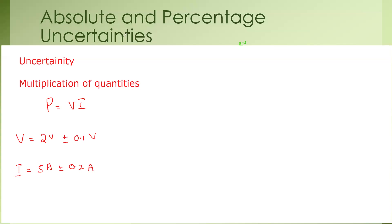Now how do we work out the uncertainty here? We will add, because whenever we want the total or compound uncertainty, we add. But the problem is that the two quantities do not have the same units — the unit of voltage is volts and the unit of current is amperes.